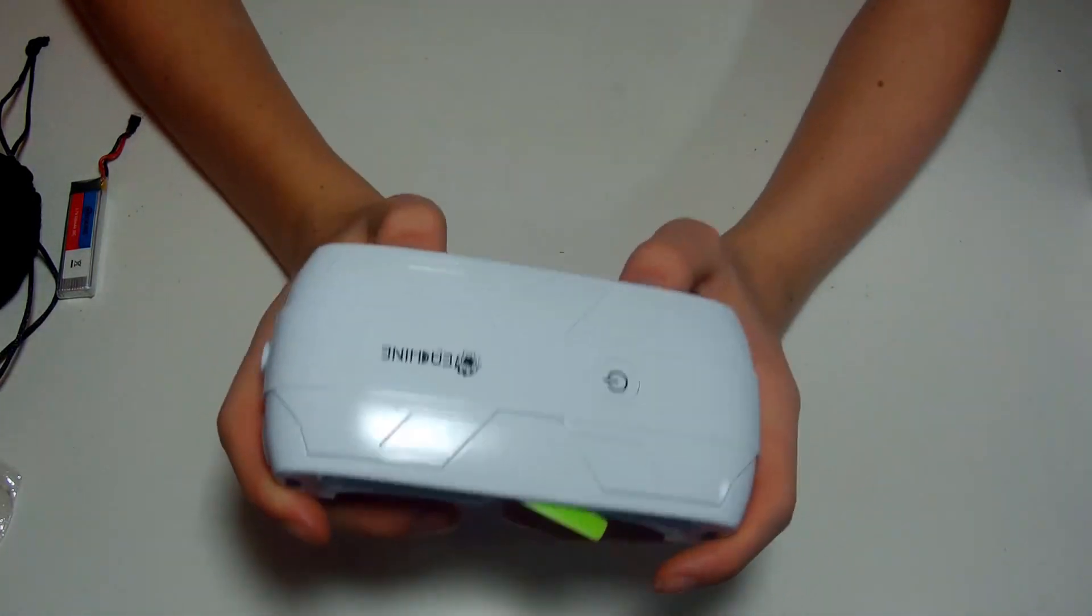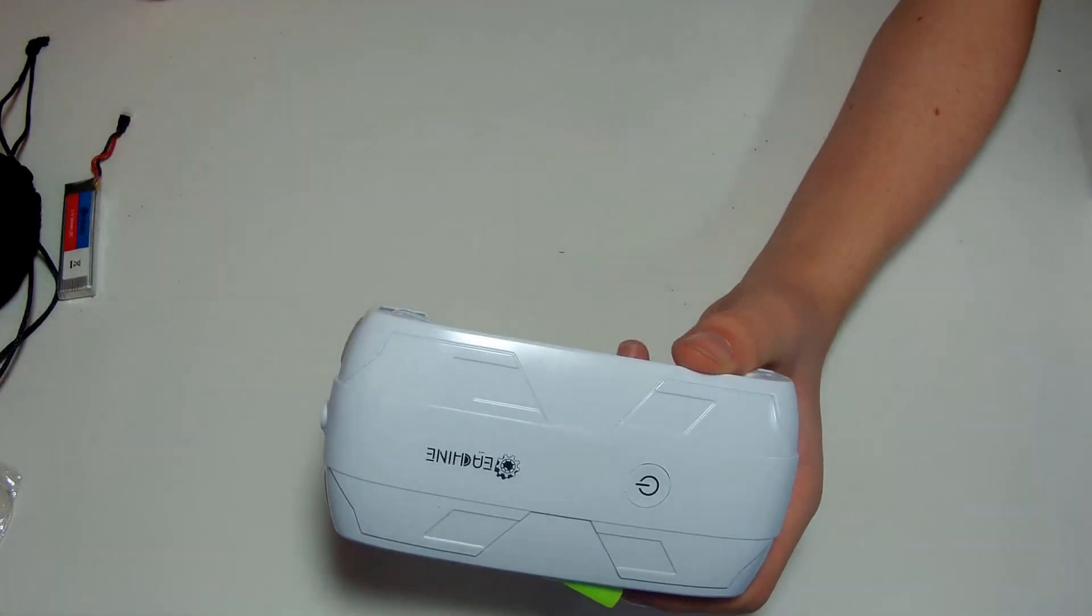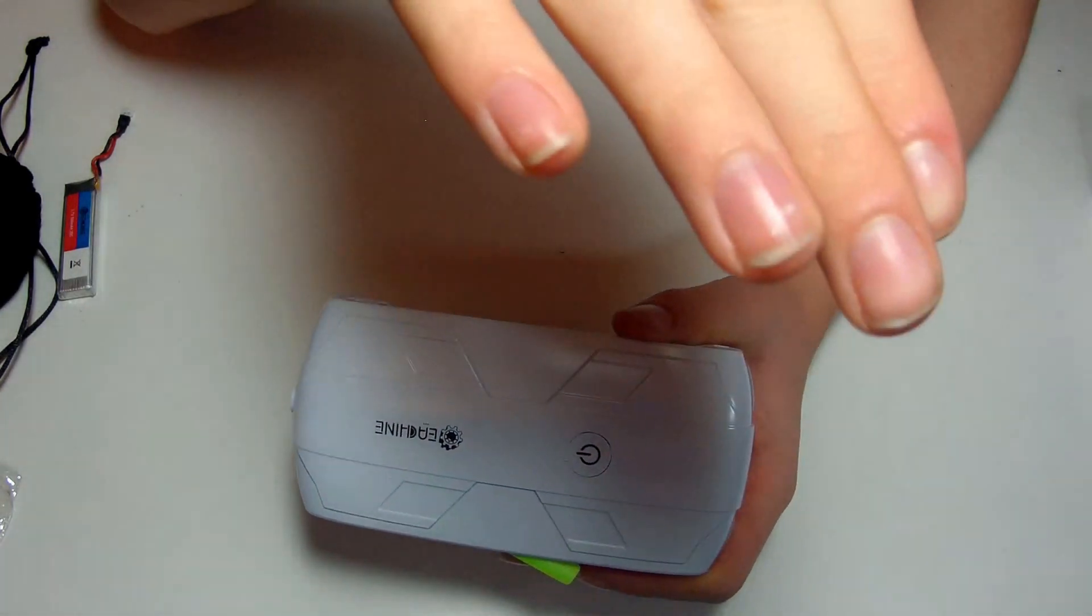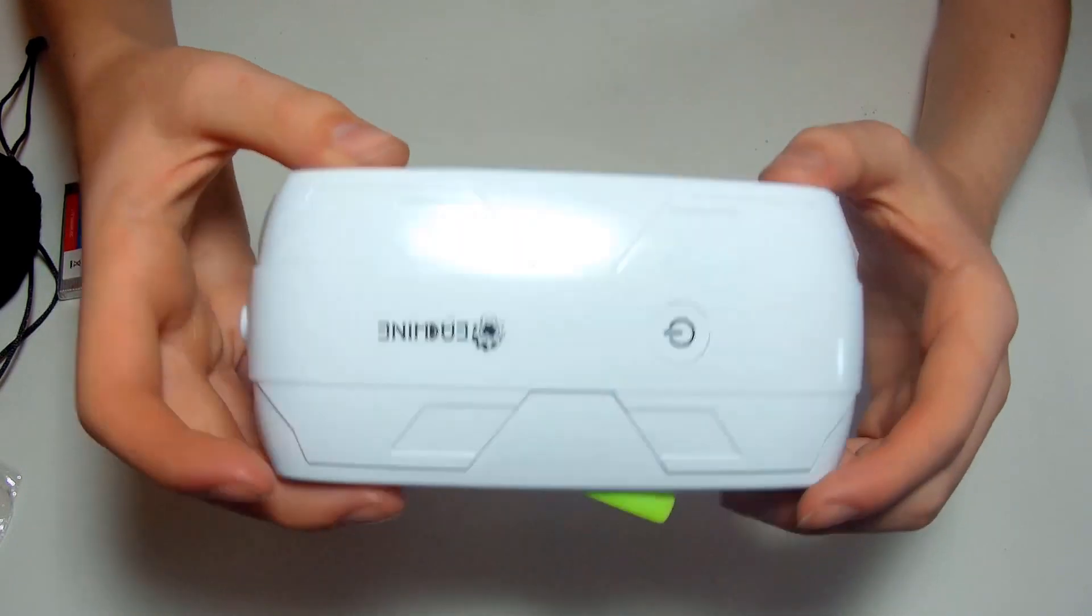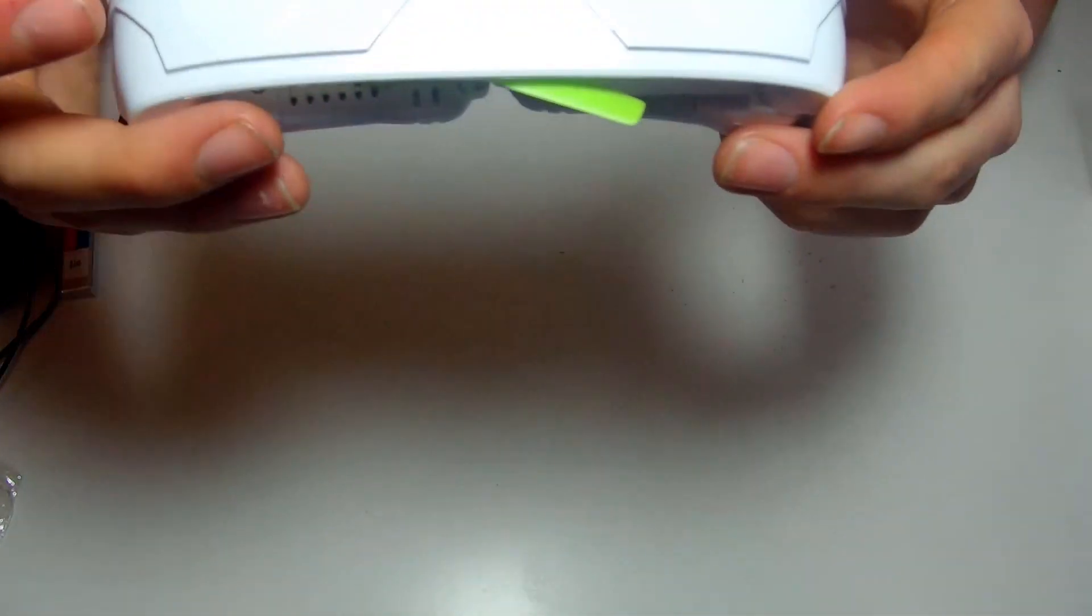Because this drone has no failsafe, if your phone loses connection it's going to start to slowly come down and try and land. But if there's any wind, because this is so light, it starts to drift away.